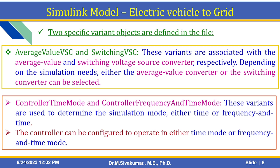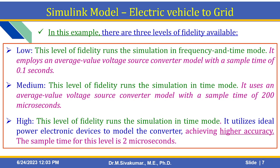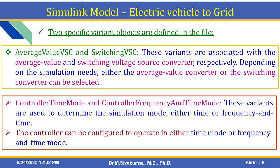Next is controller time mode. There are two modes: controller time mode and controller frequency and time mode. These variants are used to determine the simulation mode — either time or frequency and time. The controller can be configured to operate in either time mode or frequency and time mode. The two variant objects are average value VSC, switching VSC, controller time mode, and controller frequency mode.